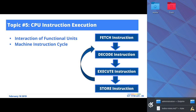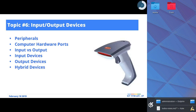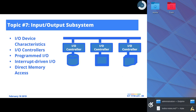Then we'll start looking at input/output devices — the different types and categories of peripherals. Specifically we'll look at input devices, output devices, hybrid devices, network devices, and communication devices. Afterwards we want to understand exactly how these peripheral devices are interfaced with the computer system.